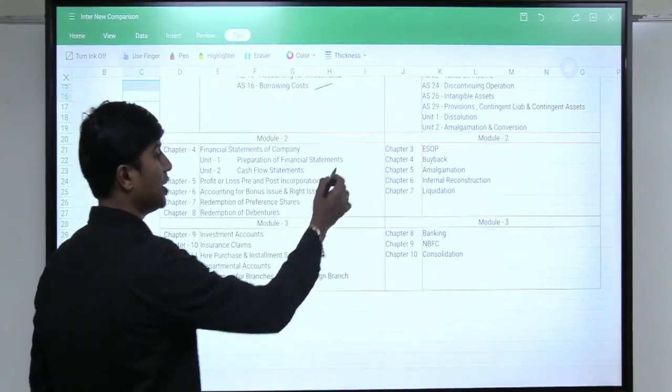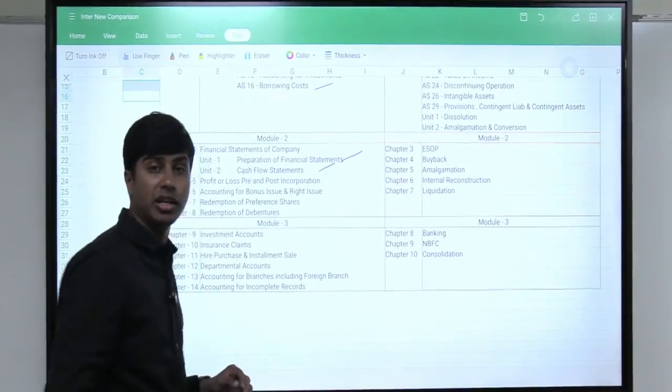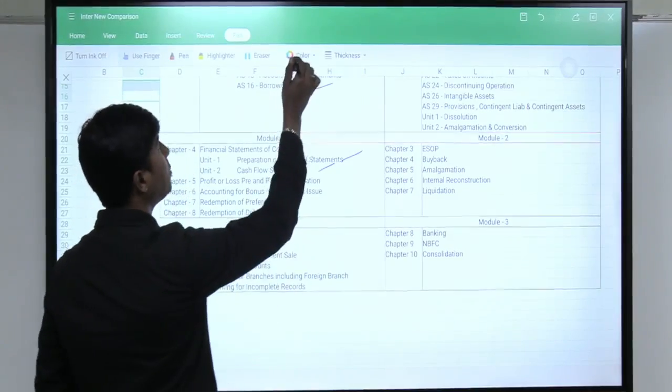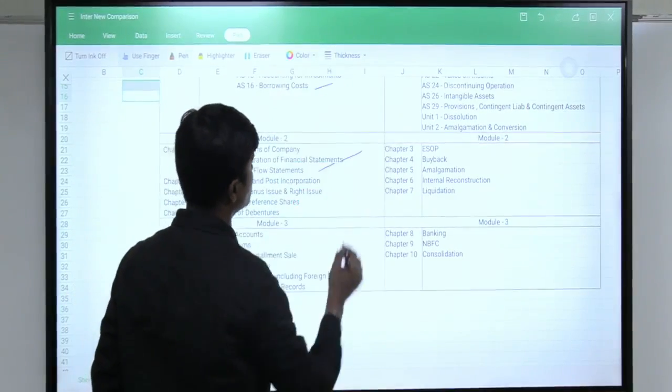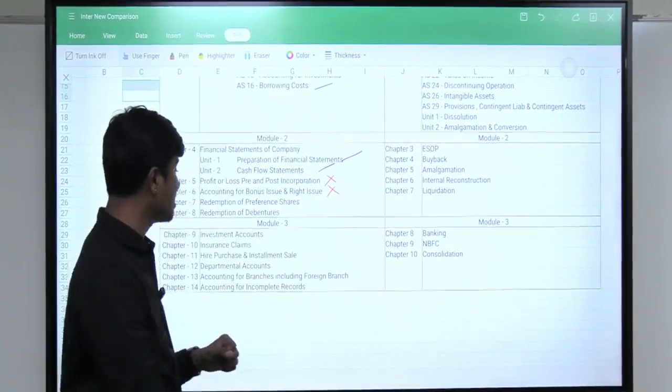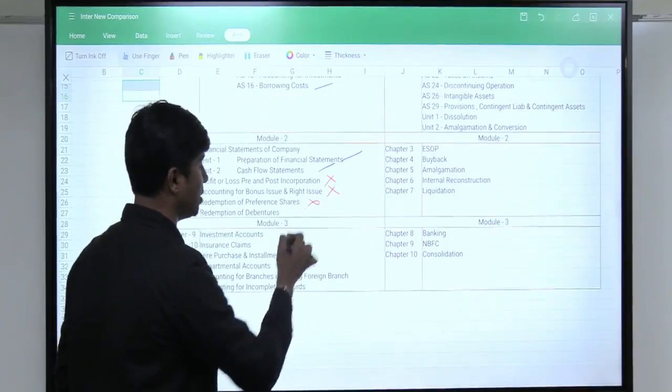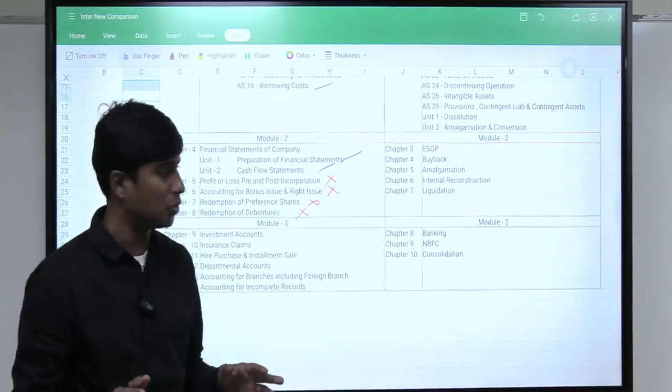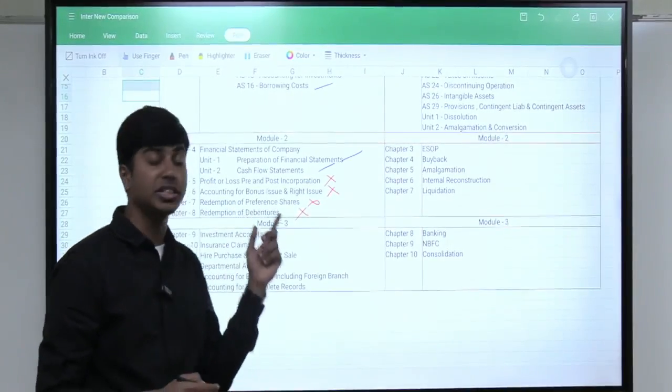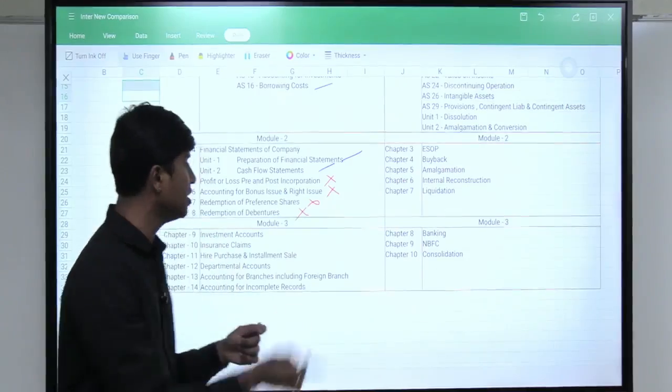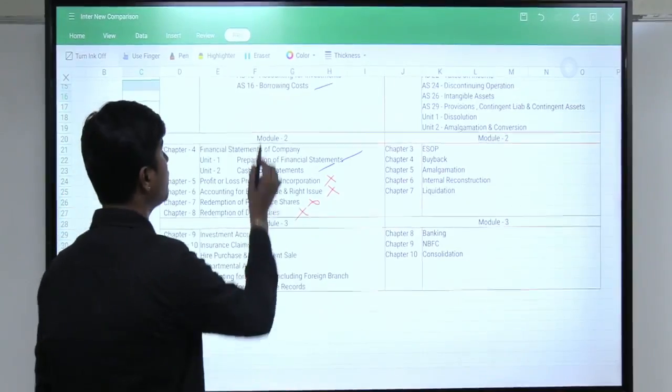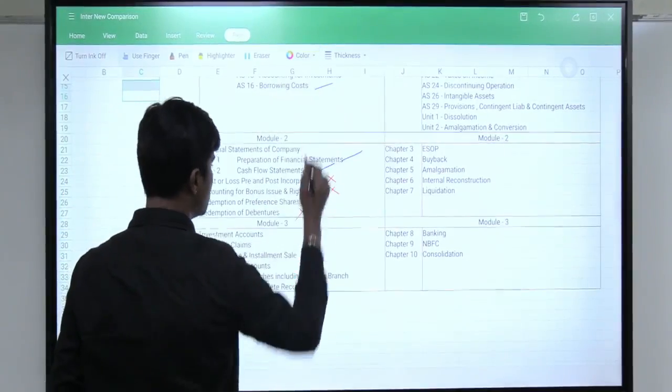Under Module 2, we had preparation of financial statements and cash flow statement. This is also there in our new scheme of education advanced accounting. Profit pre and post incorporation which was your favorite chapter, bonus issue and right issue which none of us know why it was in syllabus and redemption of preference shares and debentures is not part of syllabus anymore. Preparation of accounting entries for bonus issue, right issue, preference shares and debentures are shifted to foundation but profit pre and post incorporation is tata bye bye forever. Investment accounting is still there, you will still learn it.